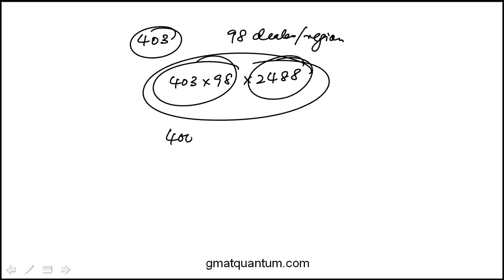So approximate this to nice numbers: 400, 100, and 2500. And you might recognize 25 times 4 is 100. We count the other zeros. There are 6. So that's 10 to the 6.